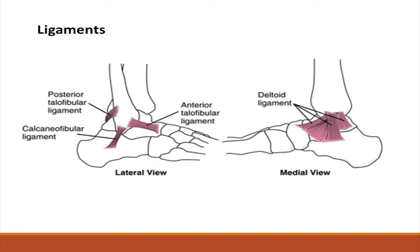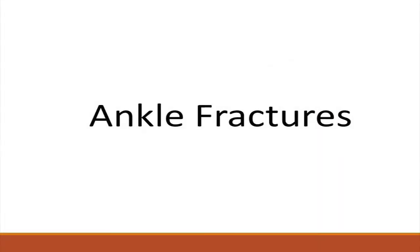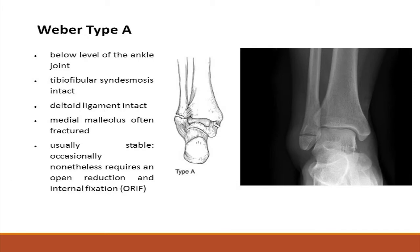When dealing with an injury to the ankle joint, a clinician must bear in mind that a fracture to the ankle may occur in association with ligament damage, which would not show up on an x-ray. The Weber classification is a method of describing ankle fractures based on the level of the fracture in the distal fibula. It has three categories.